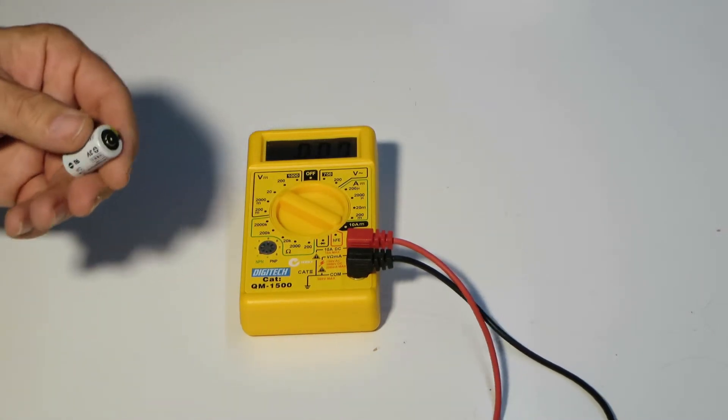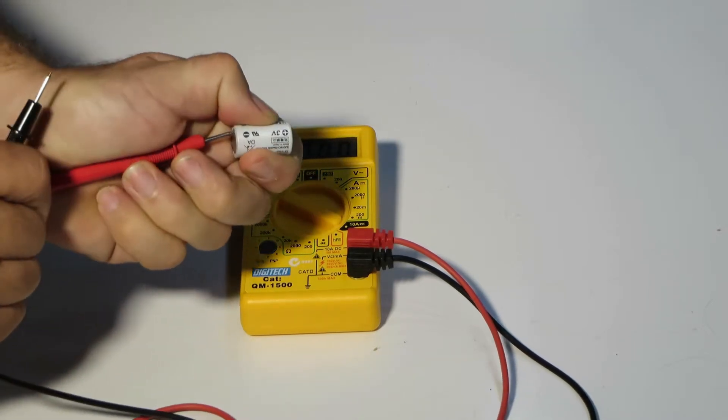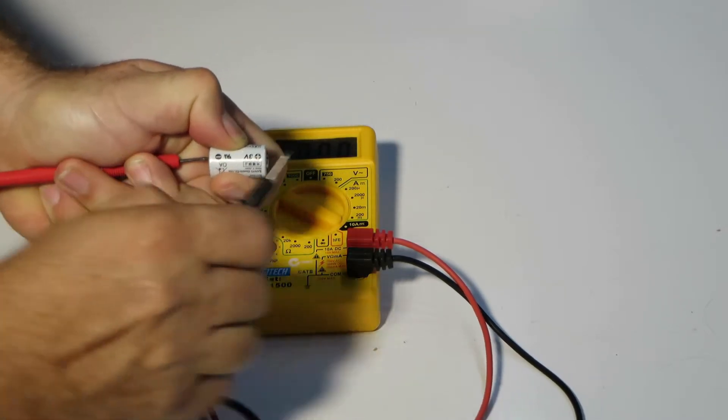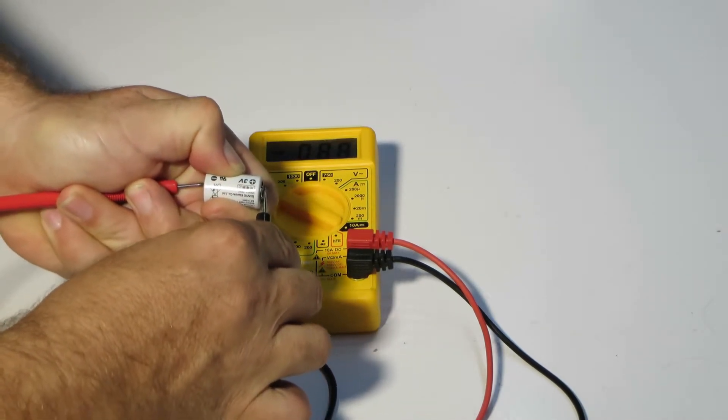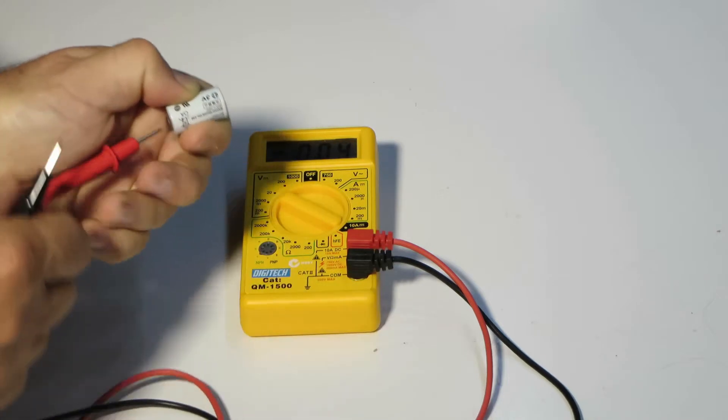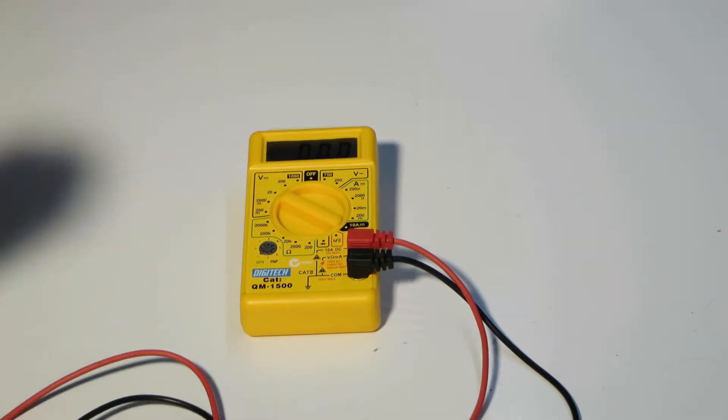Now if I put the probes on backwards, say I put the red onto the minus and the black onto the positive, it reads about minus 0.9 volts. So it's no big deal if you measure it backwards, you get a minus.